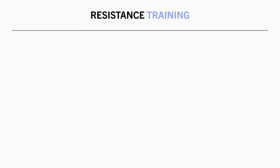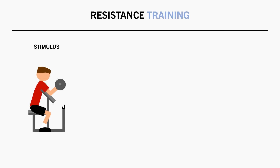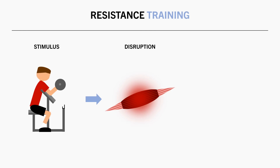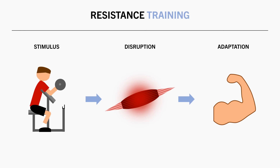To understand why, let's take a look at what is known as the general adaptation syndrome. At the most fundamental level, adaptation occurs as a result of an initial stimulus. This stimulus causes a disruption to homeostasis, or the biological system's normal state of being. As a result, the system adapts to this stress in some capacity. In the case of muscle growth, the initial stimulus is resistance training, and without resistance training, there is no significant stimulus to adapt to.